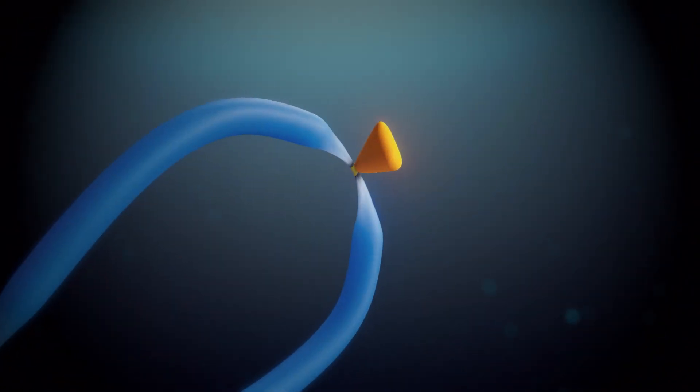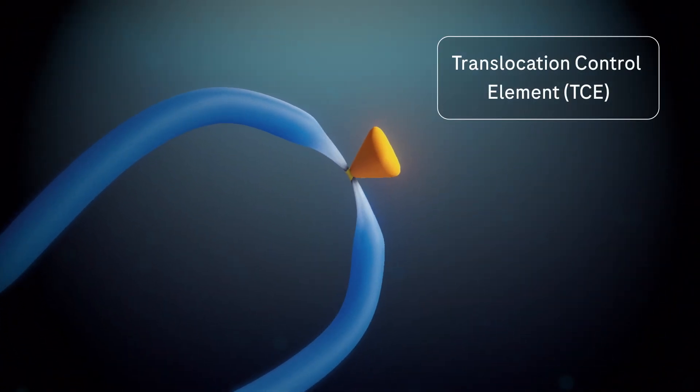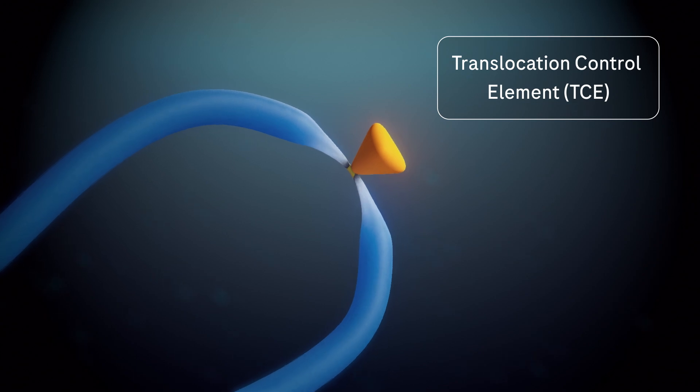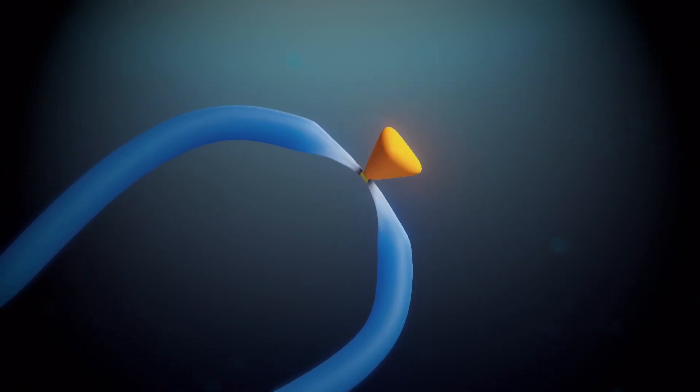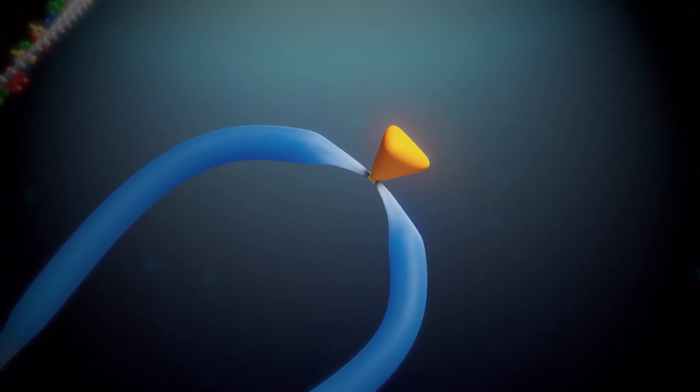Located in the center of each reporter is the translocation control element, or TCE, that modulates expandomer movement during sequencing.